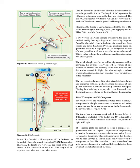The wind face of the computer has three parts: a frame, a transparent circular plate that rotates in the frame, and a slide or card that can be moved up and down in the frame under the circular plate. Figure 4-32. The frame has a reference mark called the true index. A drift scale is graduated 45° to the left and 45° to the right of the true index — marked drift left and drift right. The circular plate has around its edge a compass rose graduated in one degree units. The center line is cut at intervals by arcs of concentric circles called speed circles, numbered at intervals of 10 units.